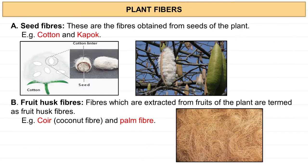Here we will see one fiber at a time. Seed fibers — you can see cotton, which we take from seeds. Next is fruit husk fiber — you can see coir, which is the layer of hair from the coconut, which makes fibers from its husk.